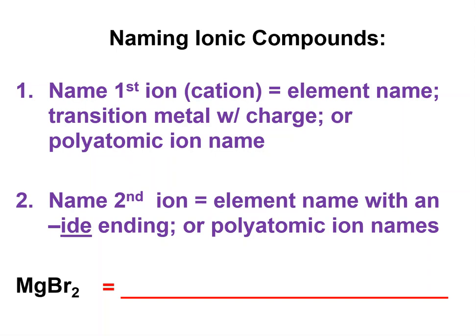Naming ionic compounds is really simple. All you do is name the ions in order. The metal will always be first in the name and in the formula. If the metal is one that can have more than one charge, you need to use a Roman number to tell which one it is, and then name the anion.